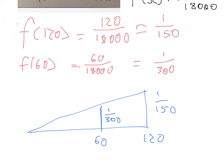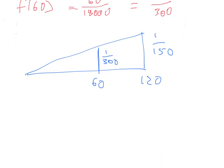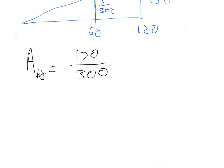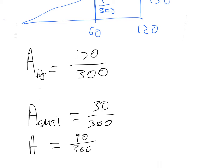So we've got 60, 120, and we know this height here is 1 over 150, and this height here is 1 over 300. And so we know the formula for the area of a triangle is base times height divided by 2. So therefore, we have area big equals 120 divided by 300. Area small equals 60 divided by 300, but then it's got to be half of that. So it's 30 divided by 300. And so the difference between them is big minus small, 90 over 300.